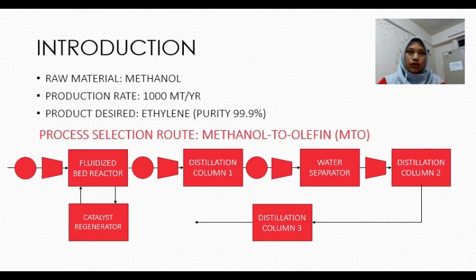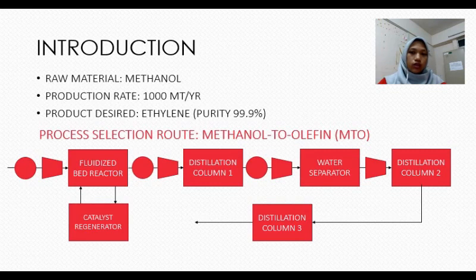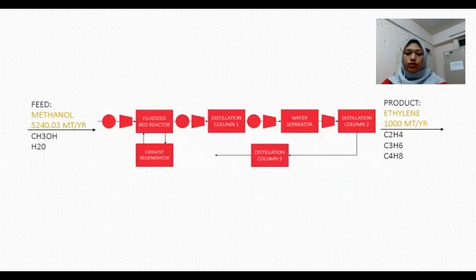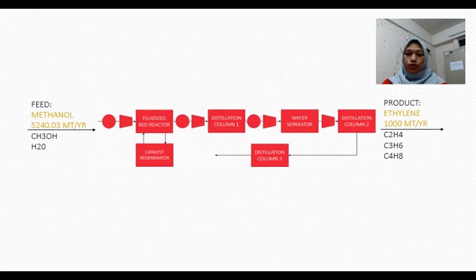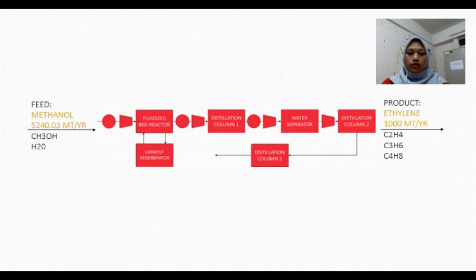Basically our raw material for this project is methanol, where we are required to produce an amount of 1000 metric ton ethylene per year with its purity of 99.9%. We decided to use methanol to olefin process to produce our ethylene. Our methanol with the molar flow rate of 5,240.03 metric ton per year. The feed for our process is methanol and water.